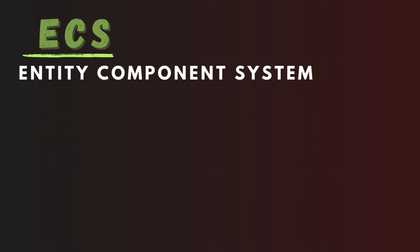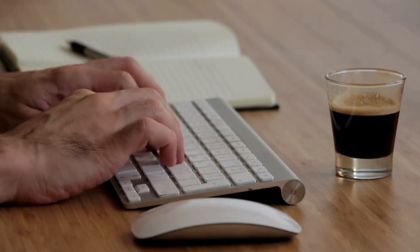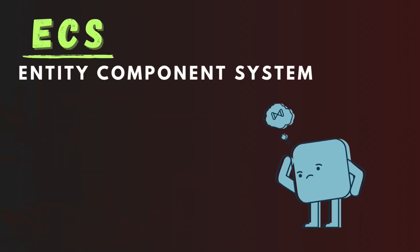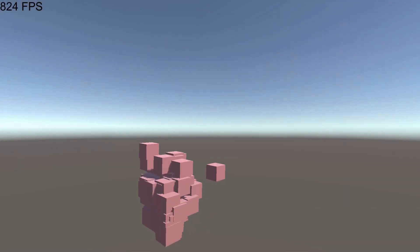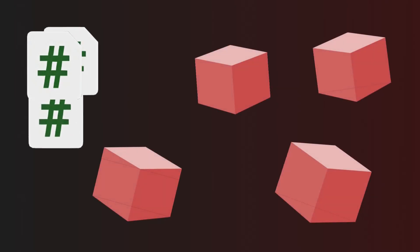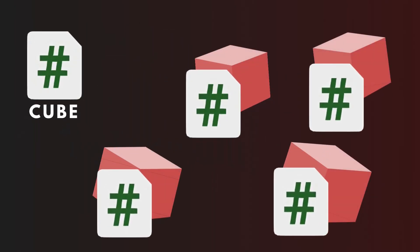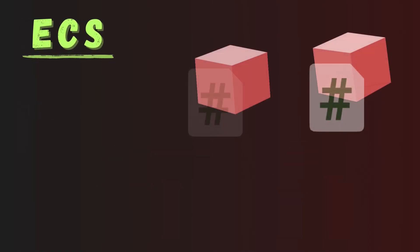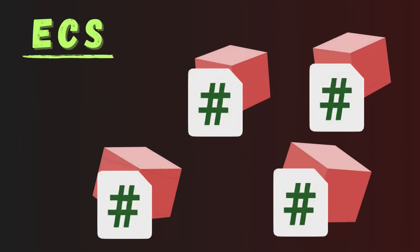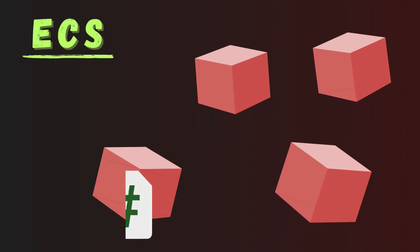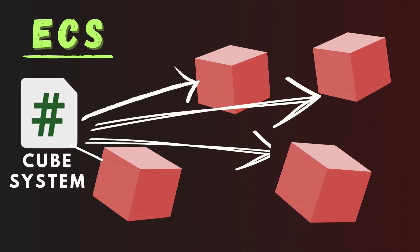ECS is also known as Entity Component System, and using it you are still writing classic C# code, but you just need to think about it differently. For example, if you want to spawn hundreds of cubes and make them move, normally you would create a cube script and put it on all of the cubes. But using ECS, instead of changing positions on each cube, you create a single script called a system that controls all cube positions.